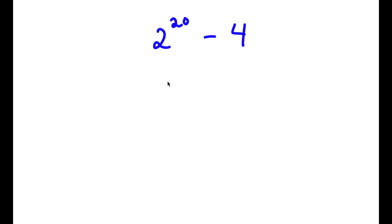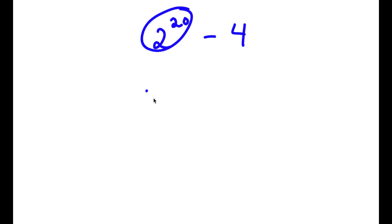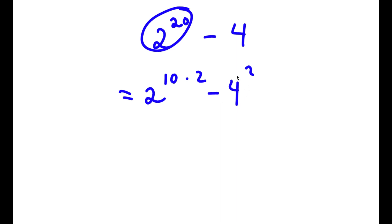In this problem, I have 2 to the power of 20 minus 4. To solve this, I'm going to first rewrite 2 to the power of 20 as 2 to the power of 10 times 2. So this is equal to 2 to the power of 10 times 2 minus 4.